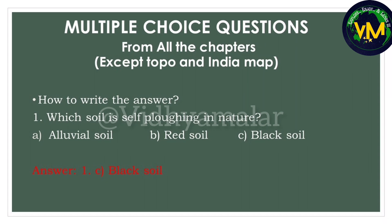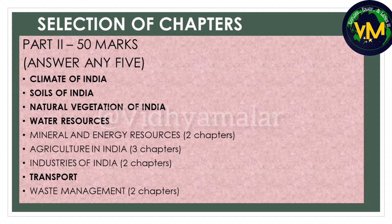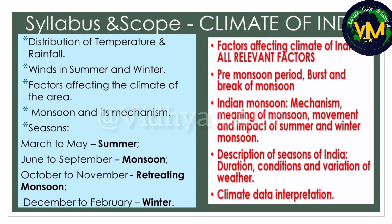Next we move on to part 2. It carries 50 marks and you are expected to answer only 5 questions out of a total of 9 questions. My 5 recommended chapters are always the single chapters: climate, soil, natural vegetation, water resources, and transport. Because for all the other chapters you will have to learn 2 or more chapters. However, it is entirely up to you.